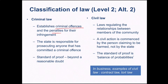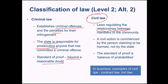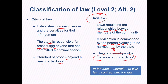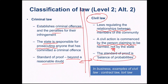Criminal law is about criminal offences and penalties — the state prosecutes people, and the standard of proof is beyond a reasonable doubt. Civil law regulates relationships between the community; a civil action is commenced by the person claiming the harm, not the state. The standard of proof is the balance of probabilities. This difference in standard of proof is a key reason it's important to understand this distinction.